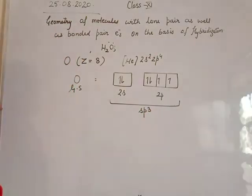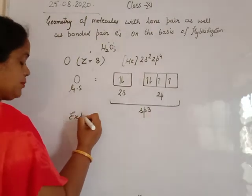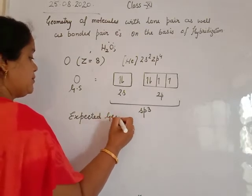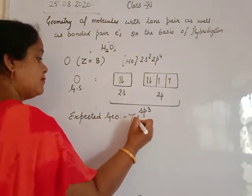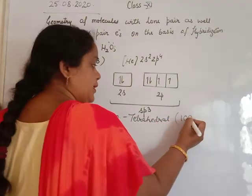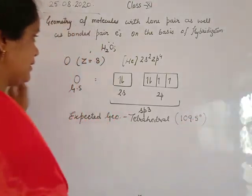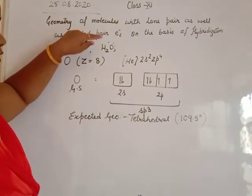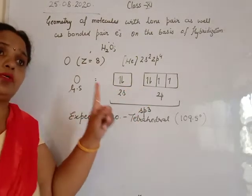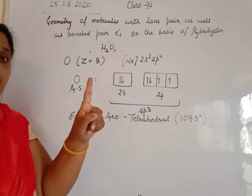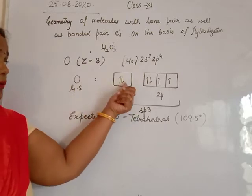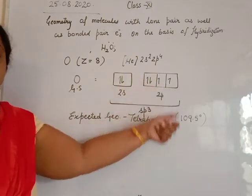But the bond angle in the case of water decreases more than in ammonia, due to the presence of two lone pairs. Ammonia has only one lone pair, so only lone pair–bond pair repulsion acts. But in water, there is lone pair–lone pair repulsion as well as lone pair–bond pair repulsion. The expected geometry based on hybridization is tetrahedral.